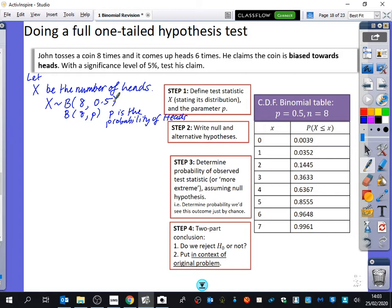Then we write down the null and alternative hypotheses. You get a mark for doing this, even if you can't do the rest of the question. You might as well get this free mark. The null hypothesis is that we think the coin is just 0.5. The alternative hypothesis, he thinks that the probability of getting heads is biased. He thinks it's bigger than 0.5.